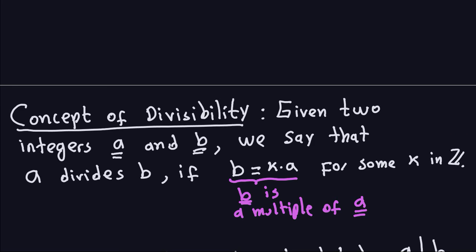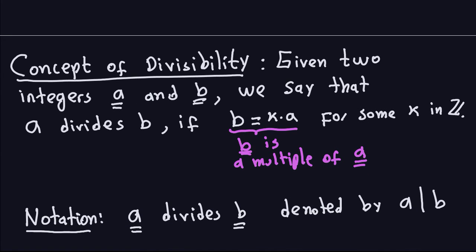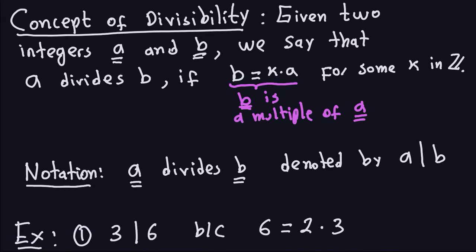It's important that this K has to be in ℤ. If K is a fraction, then that won't be divisibility. We're going to use some notation: instead of writing 'A divides B,' I'm just going to write A, a vertical bar, B — so A|B. This means exactly the same thing. This A|B is a statement, not a computation, and I'm going to emphasize that later.